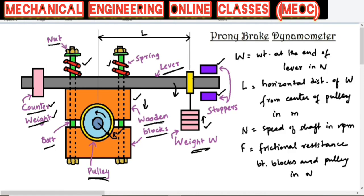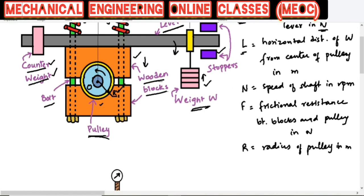Suppose that W is the weight at the end of the lever in newtons, and capital L is the horizontal distance of the weight from the center of the pulley in meters. N is the speed of the shaft in RPM, and F is the frictional resistance between the blocks and the pulley. Capital R is the radius of the pulley in meters.